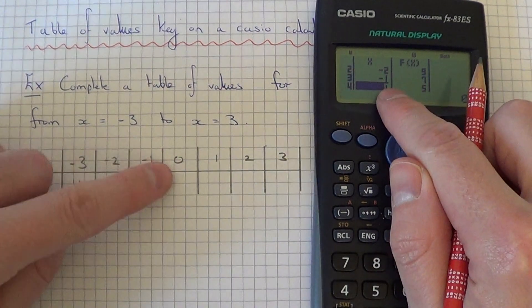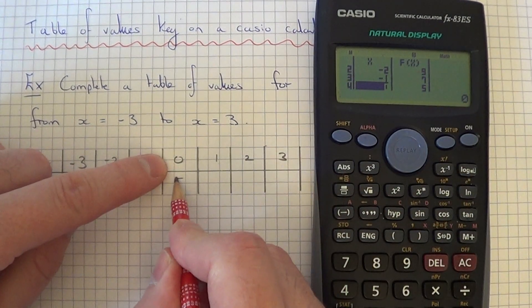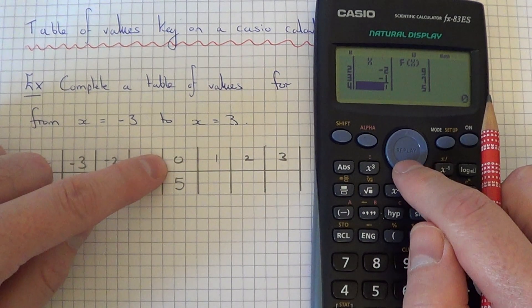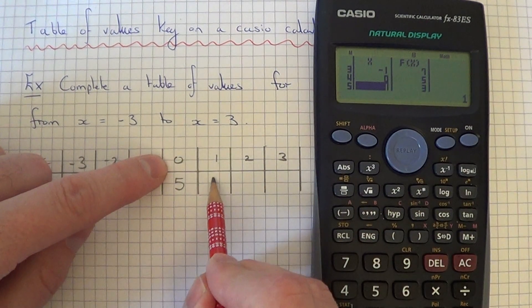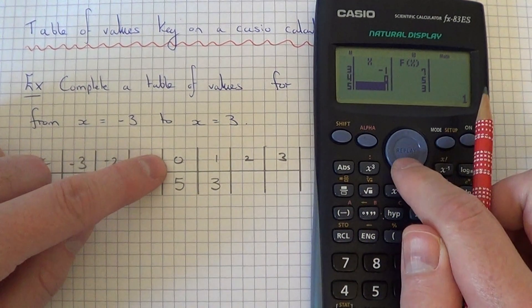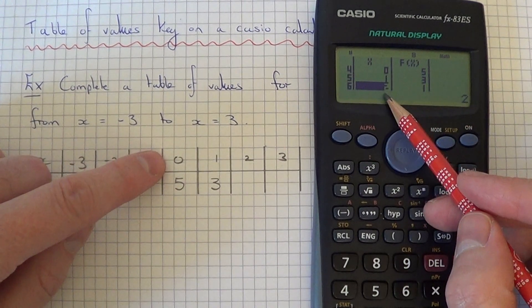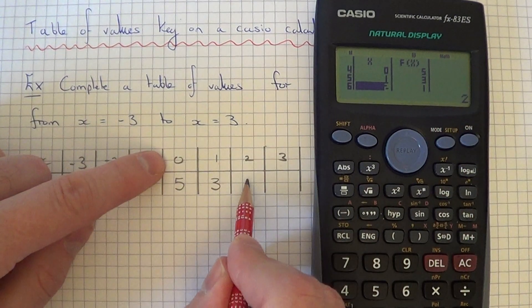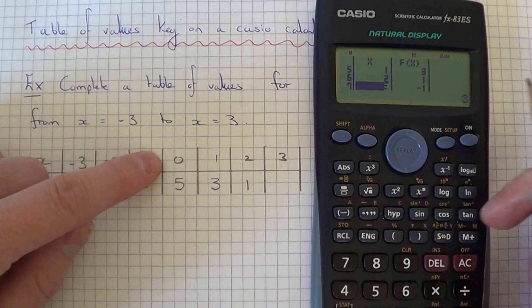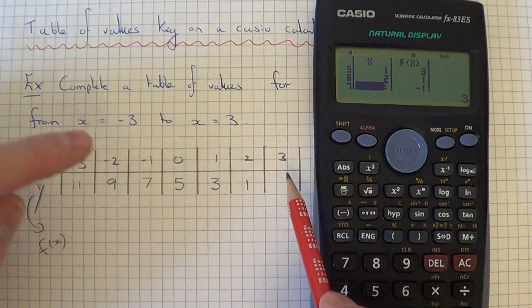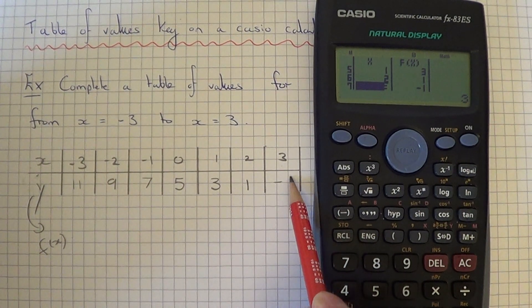At x equals 0 the y coordinate is 5. At x equals 1 the y coordinate is 3. At x equals 2 the y coordinate is 1, and at x equals 3 the y coordinate is minus 1.